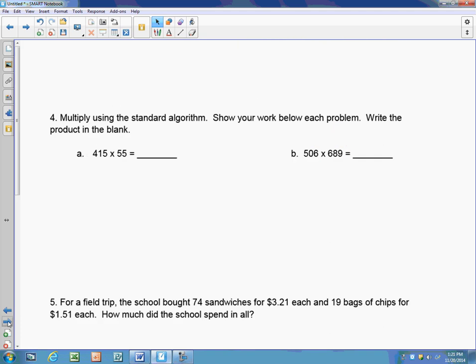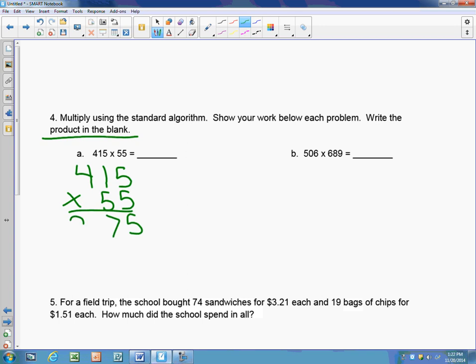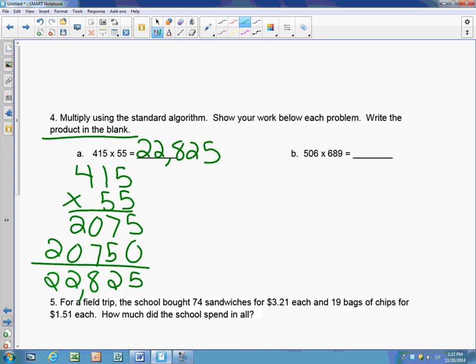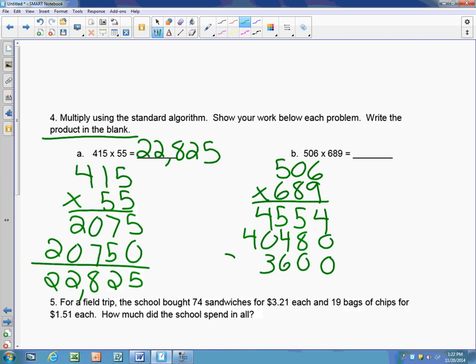Next, on the next page, it tells me to multiply using the standard algorithm, show your work below each problem, and then write the product in the blank. Please make sure you do that. So when I take my 415 times 55, I get 22,825, and I need to make sure that I put it up here. The next problem is 506 times 689. I add it all up and I get 348,634. And once again, make sure that I put the product on the line.